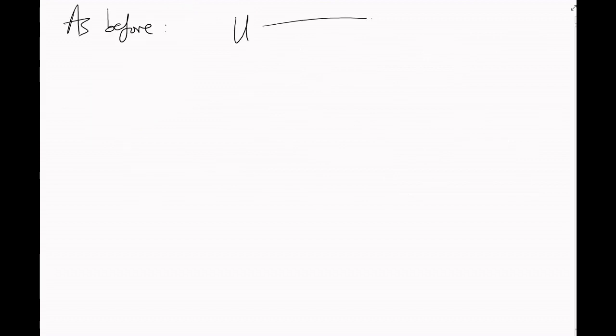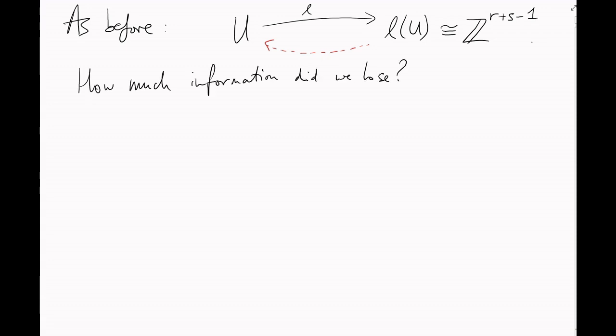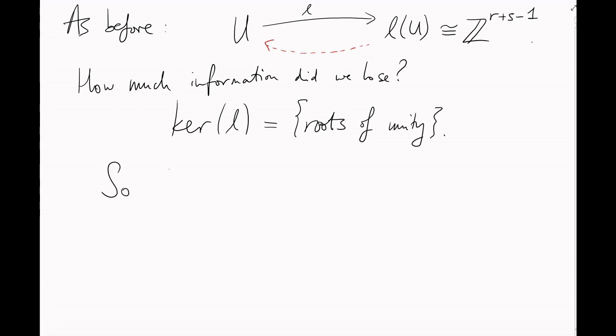All right. Let U be the group of units. As before, we've given a full algebraic description of L of U. Now all we need to do is work out how much information we lost by taking logs. But all we lose when taking logs is the finite group of roots of unity. So U is the direct product of a free abelian group of dimension R plus S minus 1 and a cyclic group of, say, the Mth roots of unity.